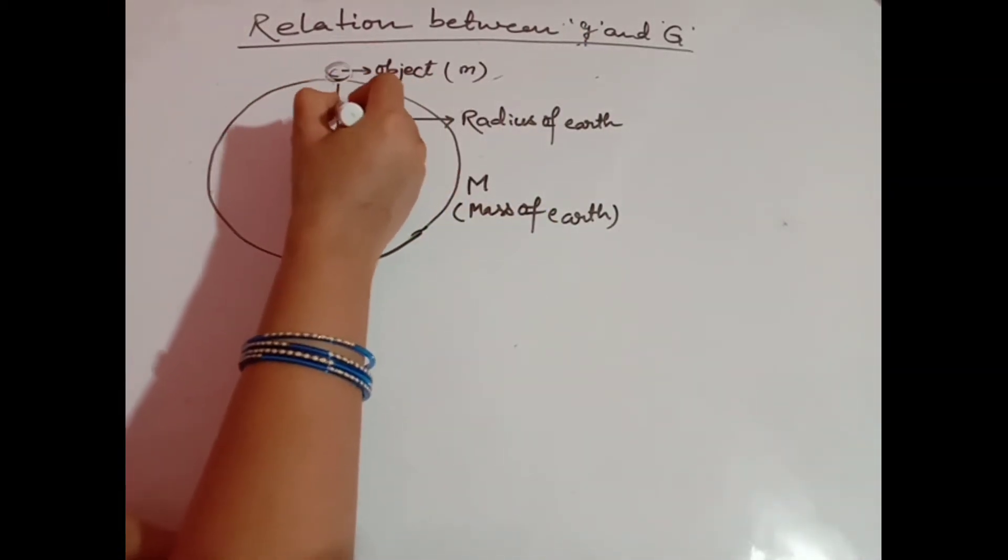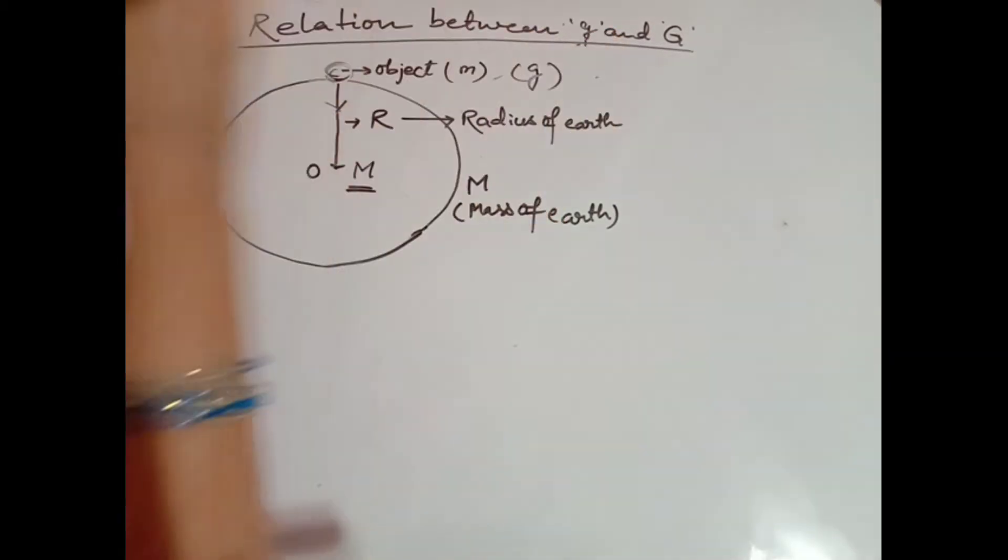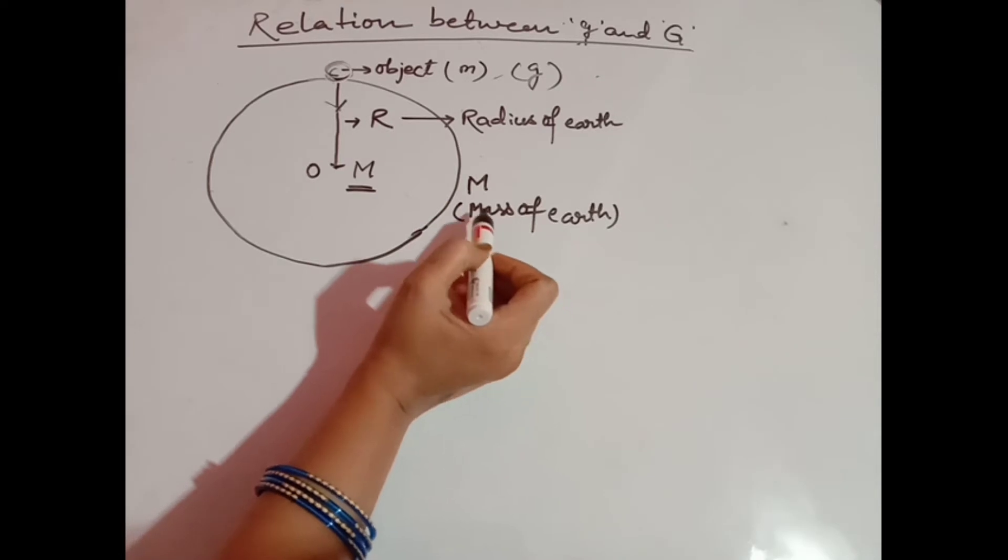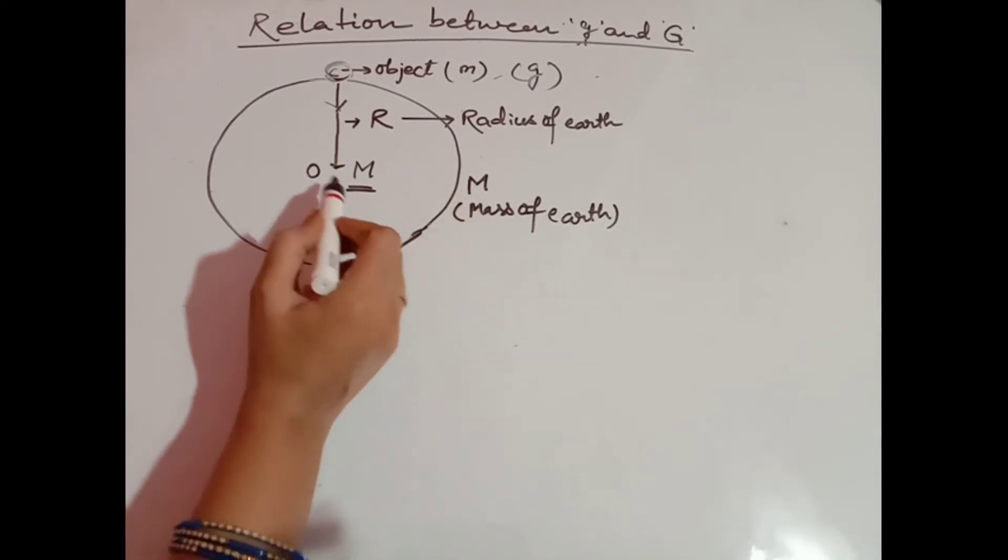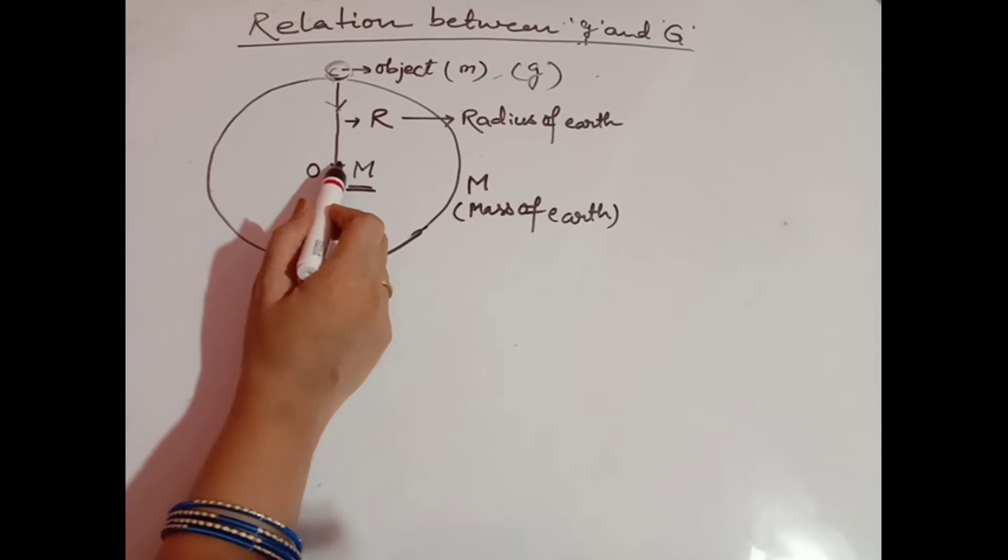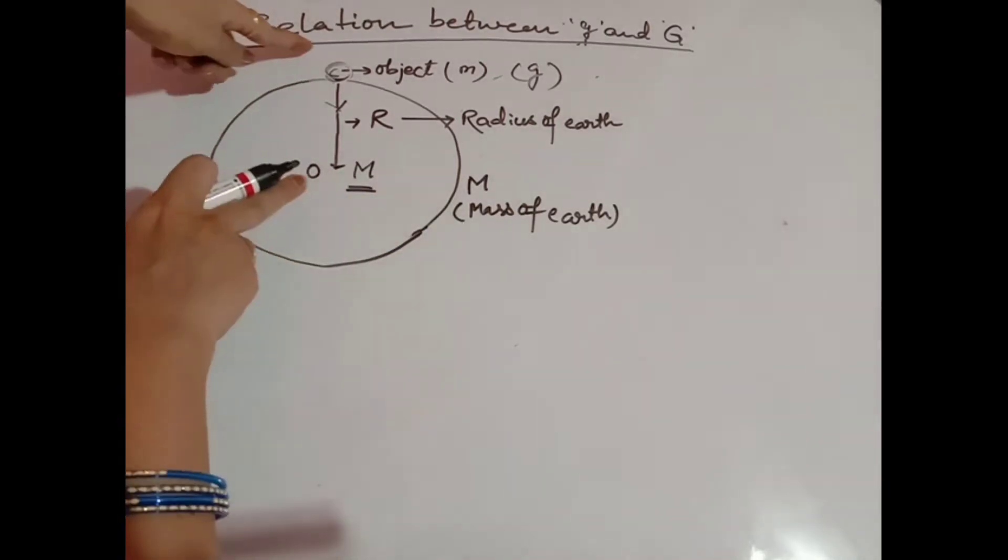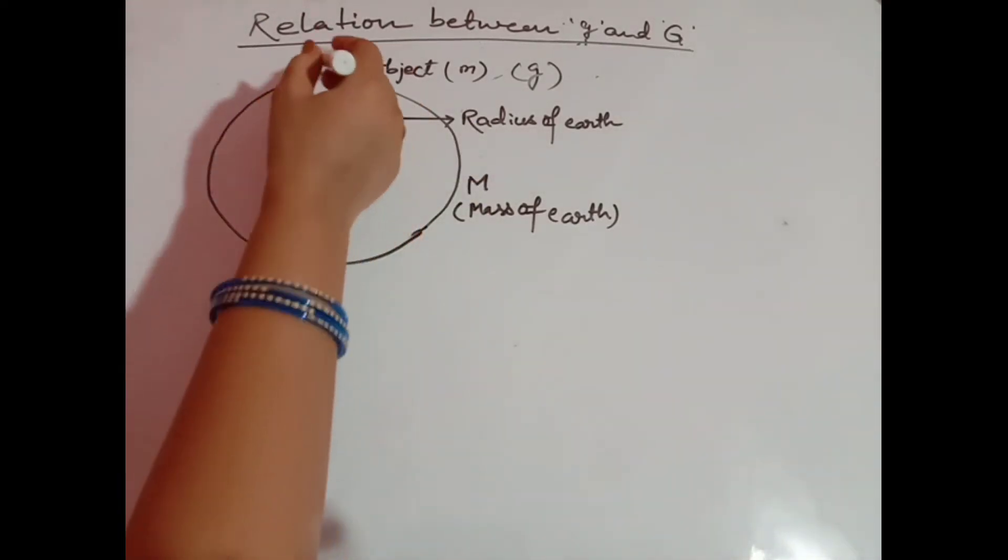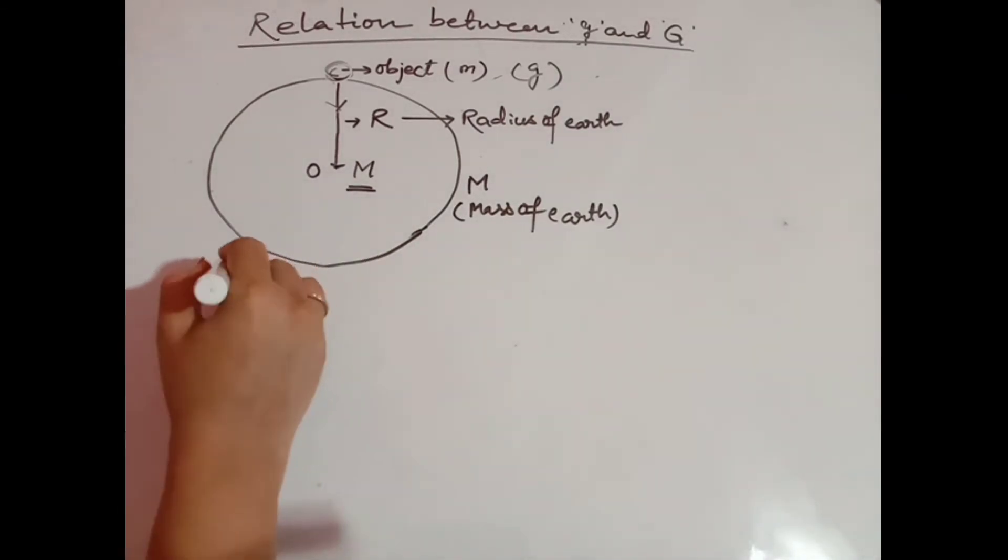The object is under the acceleration due to gravity g. Mass M is the mass of Earth and its mass is concentrated at its center. So what is the distance between the two objects? The distance between the two objects is R, that is the radius of Earth.